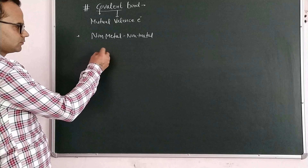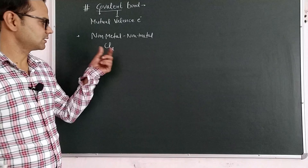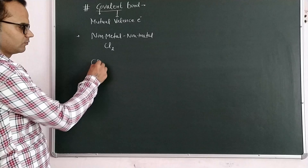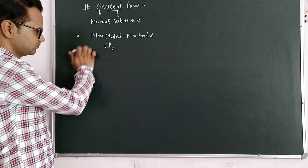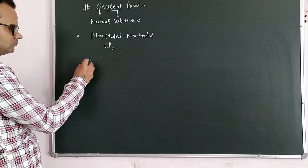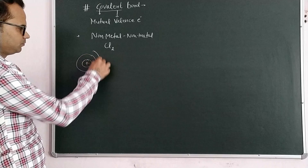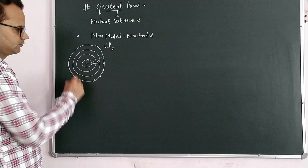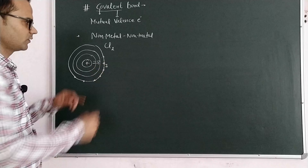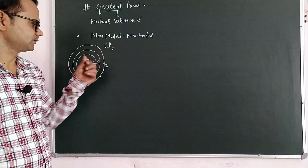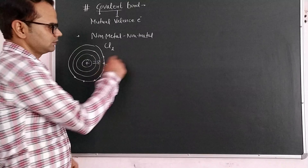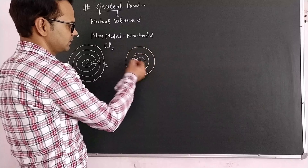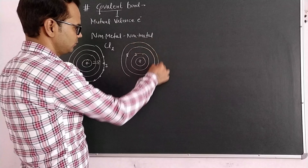For example, we have chlorine — the Cl₂ molecule exists in diatomic form. Chlorine contains seven valence electrons. The atomic number of chlorine is 17, so its configuration is 2, 8, 7 — meaning seven electrons in the outermost shell. The second chlorine atom similarly has two electrons in the first shell, eight in the second shell, and seven electrons in the outermost shell.